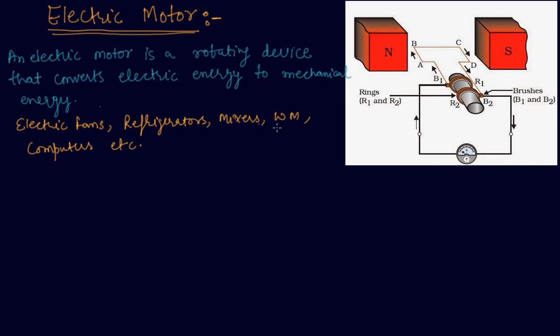So here it is shown an electric motor. It consists of a rectangular coil ABCD of insulated copper wire and the coil is placed in between two poles of magnetic field which are shown here. It is a north pole and it is a south pole.